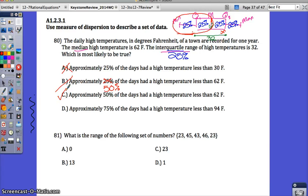Alright, 81. What is the range of the following sets of numbers? Well, remember, finding range is equal to the maximum minus the minimum. So just take the max and subtract the min from it. The maximum number that I see is 46. The minimum number that I see is 23. 46 minus 23 gives me 23. Your range, then, is 23.